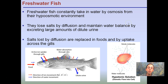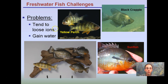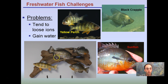Freshwater fish challenges: they tend to lose ions and gain water. A couple of common freshwater fish species — if you've been in the classroom at the panfish lab station, these are black crappie, yellow perch, and sunfish.